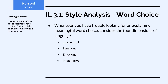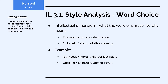Whenever you have trouble looking for or explaining meaningful word choice, consider the four dimensions of language. All language communicates on four distinct levels: the intellectual, the sensuous, the emotional, and the imaginative dimensions. The intellectual dimension is just what the word or phrase literally means — it's the word's denotation, stripped of all connotative meaning. For instance, literally the word 'righteous' just means morally right or justifiable — that is what it communicates on a purely intellectual level. 'Uprising' means just any insurrection or revolt.